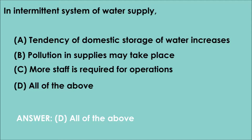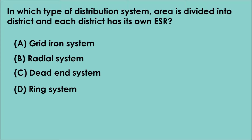Question 7. In which type of distribution system is the area divided into districts and each district has its own ESR? A. Grid-iron system. B. Radial system. C. Dead-end system. D. Ring system. The correct answer is option B. In radial system, the area is divided into districts and each district has its own ESR.